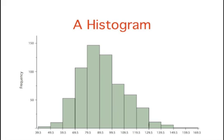We change the frequency counts into bars of various heights, and here is the resulting histogram. The first interval extends from 39.5 to 49.5 and includes three scores. The interval with the most scores, 147, extends from 79.5 to 89.5.